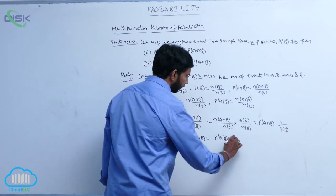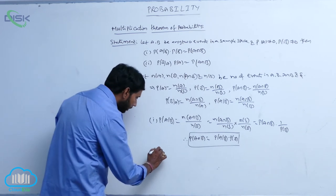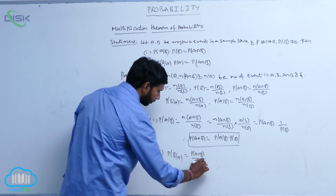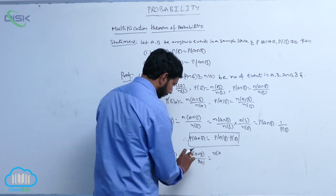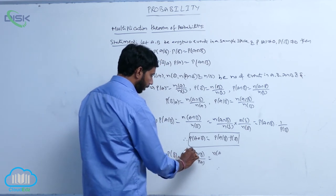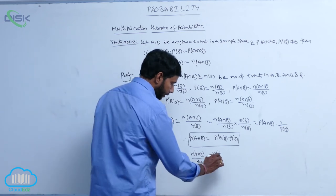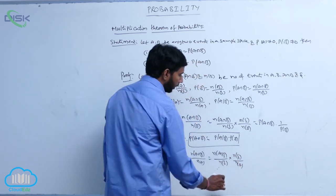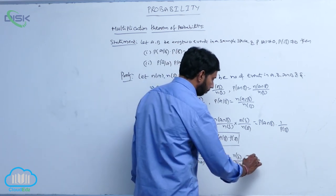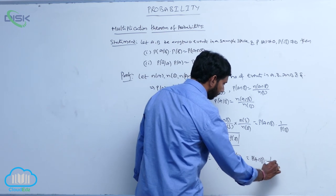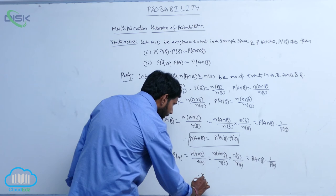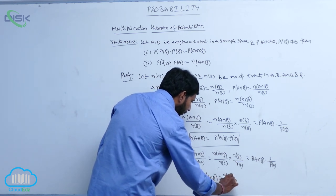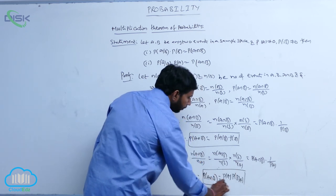Similarly, for the second one, P of B given A is equal to N of A intersection B by N of A, multiplied with N of S by N of S. That is N of A intersection B by N of S into N of S by N of A, which can be written as P of A intersection B into 1 by P of A. Cross multiplying the terms, P of A intersection B is equal to P of A into P of B given A.